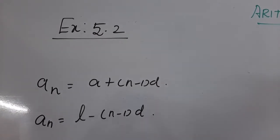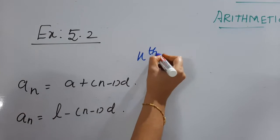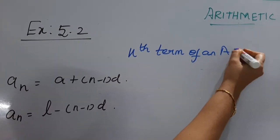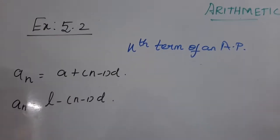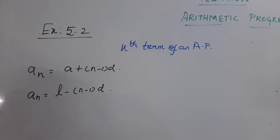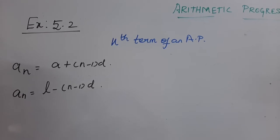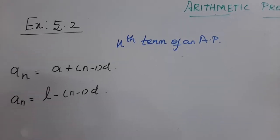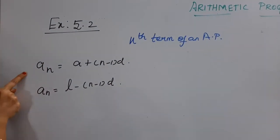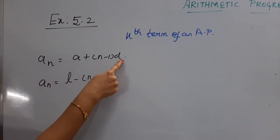The complete exercise is about the Nth term of an AP. If we randomly pick a term from an Arithmetic Progression, from the given series, that is considered as the Nth term, because we did not know the exact position of that particular term. Nth term is represented as AN. The formula for AN is: AN = A + (N-1) × D.